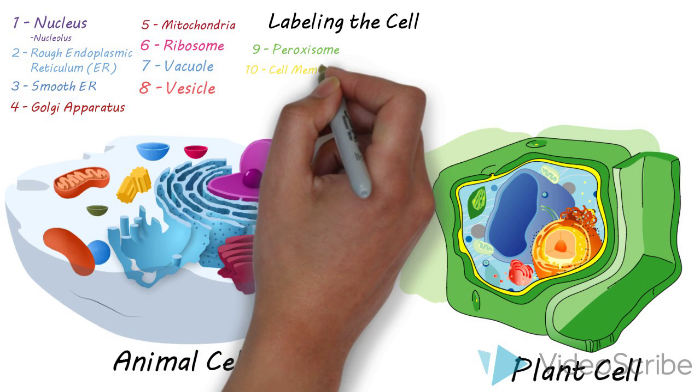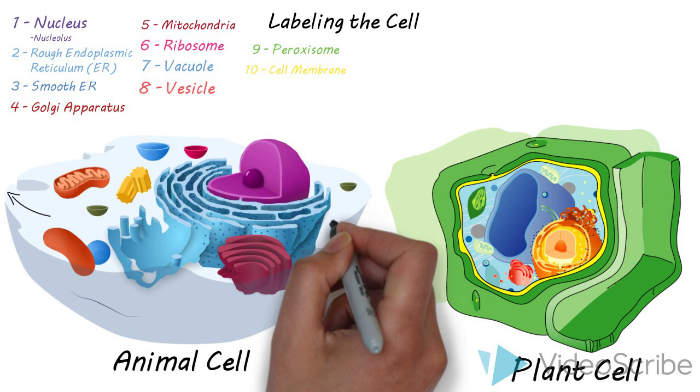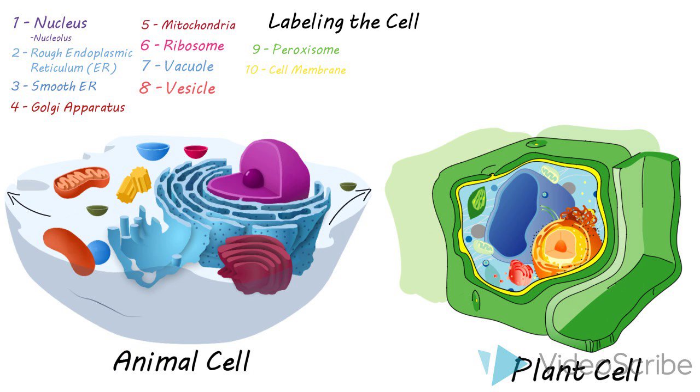The cell membrane, also known as the lipid bilayer or phospholipid bilayer, is the outer edge of the cell. Maybe the yellow here in the plant cell.